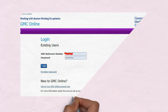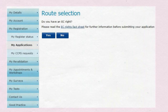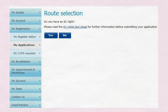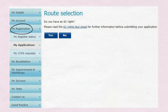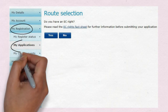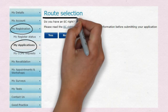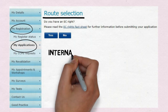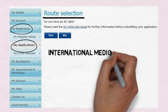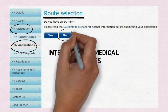Now go to the GMC Online website and log in to your account. To register for the new registration, you have to go to 'My Registration' and start a new application. In that, they will ask you about route selection regarding EC rights.